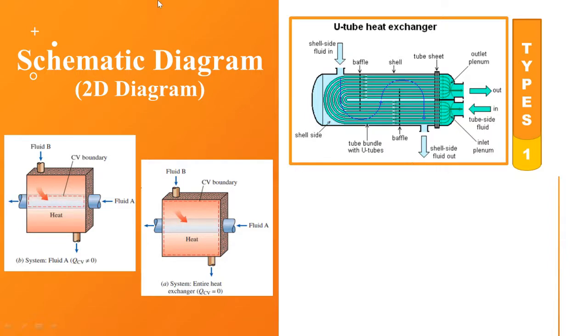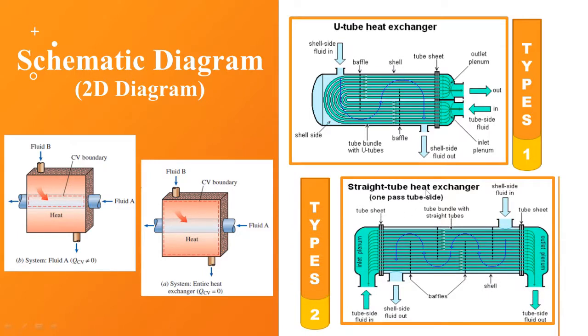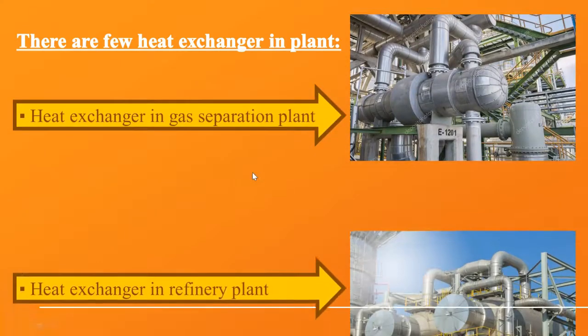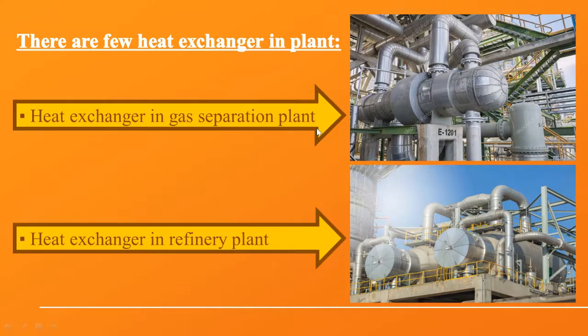We have two types of heat exchanger. Type 1 is the U-tube heat exchanger, where the fluid flows in and flows out at the same side. The other one is the straight tube heat exchanger, where the fluid flows in from one side and flows out from the other side. We have a few heat exchangers in plants. First is the gas separation plant, and another one is refinery plant.